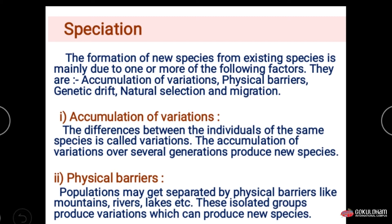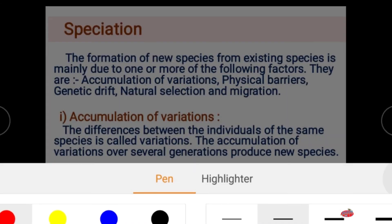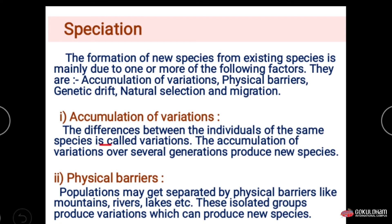The first factor is accumulation of variation. The difference between individuals of the same species is called variation. The accumulation of this variation over several generations produces new species. Generation by generation, this variation accumulates in the progeny and offspring, leading to the formation of new species.